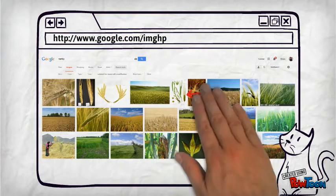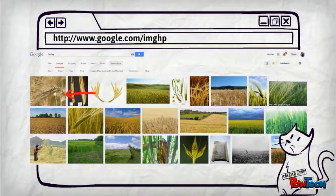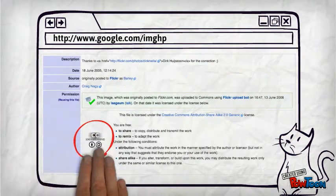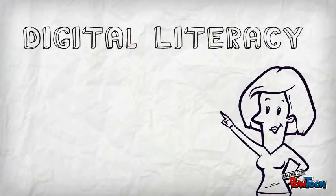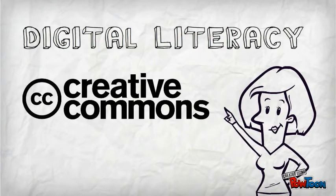Following the link to the image source should provide more details about how the author wants to be credited. Understanding common open licensing is a digital literacy skill that everyone should have if they intend to use material from the web.